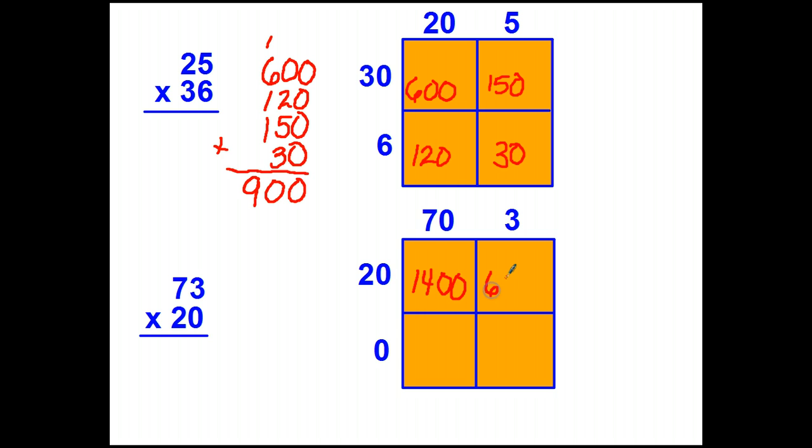20 times 3 is 60. 70 times 0 is 0, and 3 times 0 is 0. And that one's actually easy to add in your head. 1,400 plus 60 gives you 1,460.